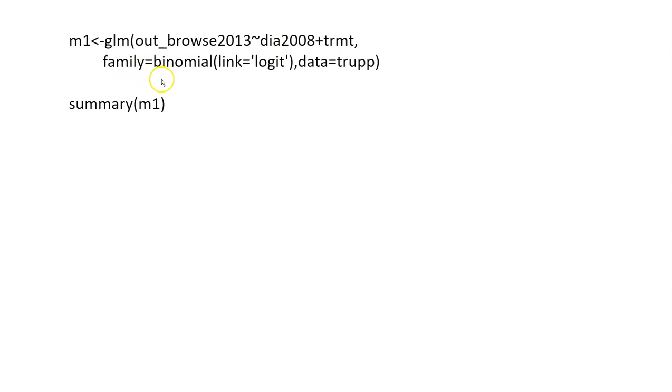And then this is a regression model. So we're going to say family is binomial, the link is logit, and then my data set name here is trupp.